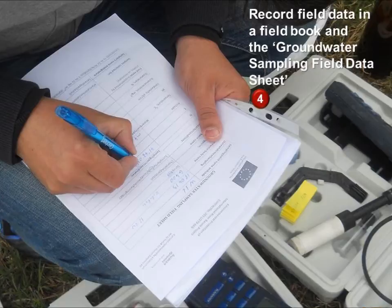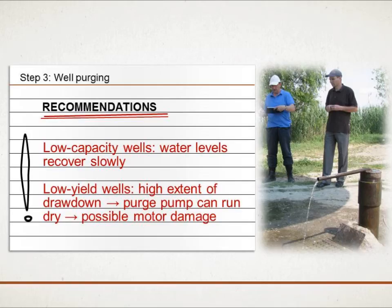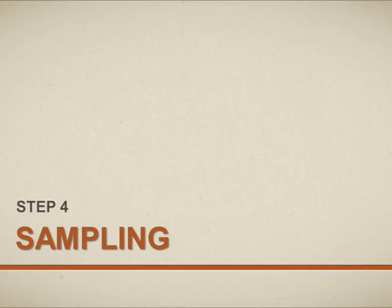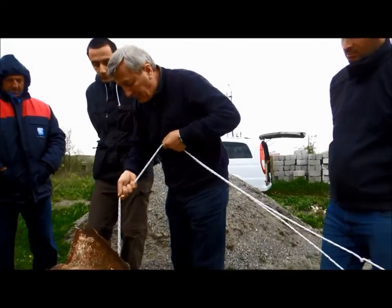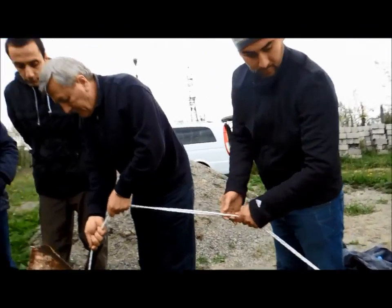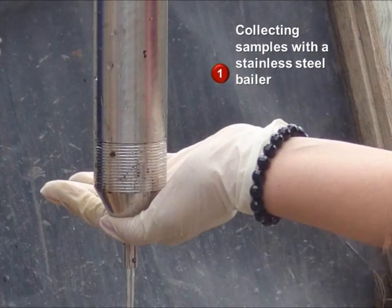All relevant field data should be recorded in a field book and also in the groundwater sampling field data sheet. Use caution when working on low capacity wells as water recovery is slow. In low yield wells, a high extent of drawdown might cause the purge pump to dry, which can damage the motor. Use a stainless steel or other baler when collecting samples from a purged well or spring to be tested for major ions, nutrients, organic compounds, and dissolved metals.